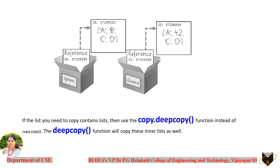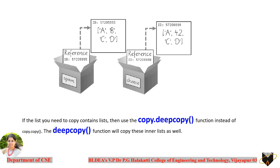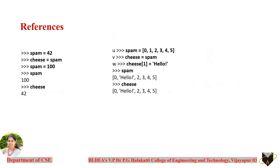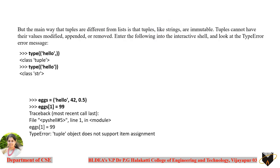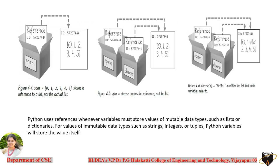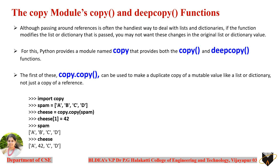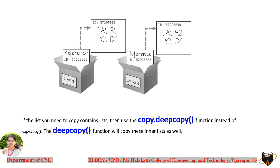Whenever you want to duplicate the values of a list, use the copy module and the copy() method. Sometimes the elements of a list are lists themselves — in that case, you can use deepcopy(). This is the end of the list chapter. In the further videos, I'll discuss some assignments or projects given at the end of this chapter.